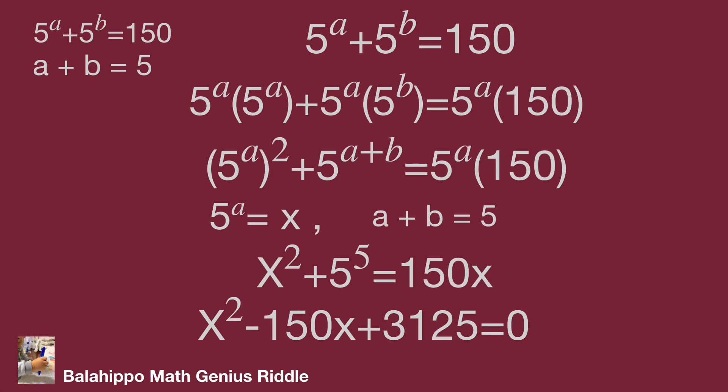We have x squared minus 150x plus 3125 equal to 0.